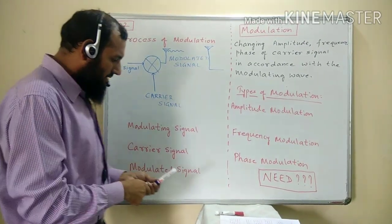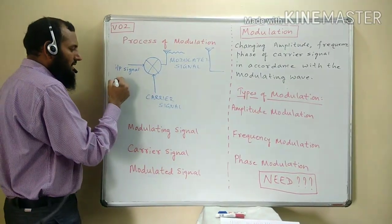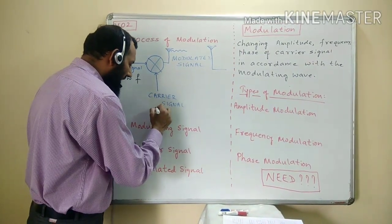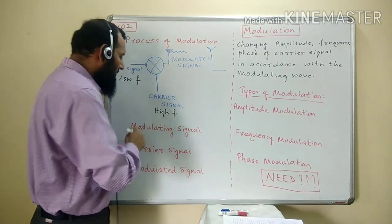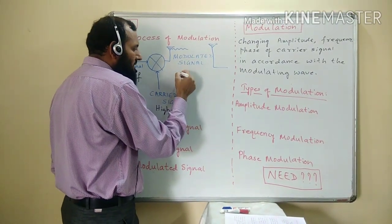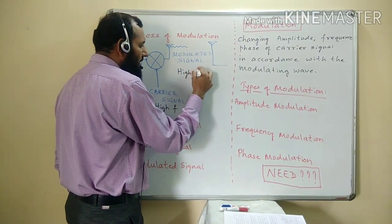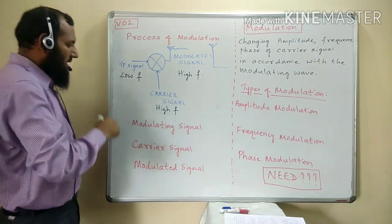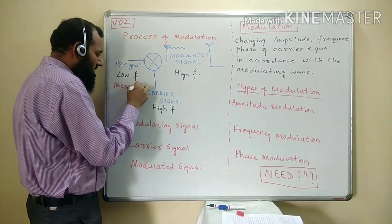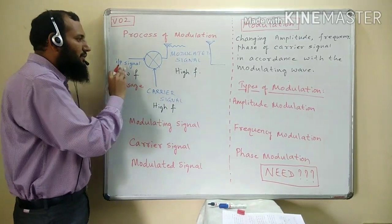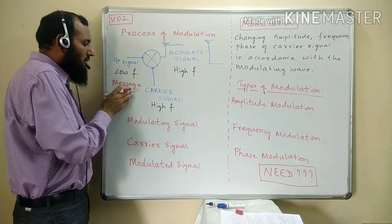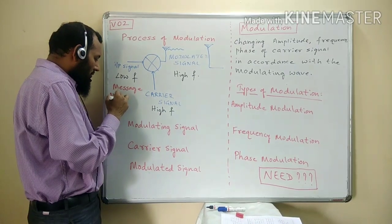In terms of frequency, this input signal is a low frequency signal, whereas the carrier signal is a high frequency signal. Both high frequency and low frequency signals are mixed to get a modulated signal, and this modulated signal is again a high frequency signal. This input signal is also called the message signal, because this is the message which we want to transmit from the transmitting antenna to the receiving antenna. It is also called the modulating signal.